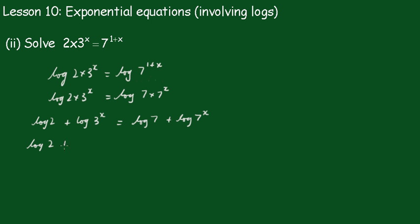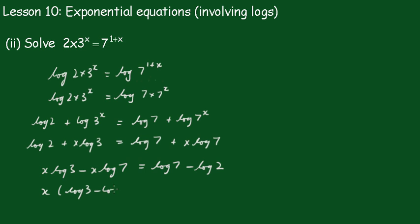Now we can change this. So it becomes log 2 plus x log 3 equals log 7 plus x log 7. Now what I'll do, I'll take this one across to the other side. And we're going to get now, it's going to be x log 3 minus x log 7 equals log 7 minus the log of 2. Taking x as a common factor, we get x outside of the log of 3 minus the log of 7 equals the log of 7 minus the log of 2.